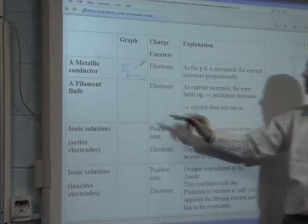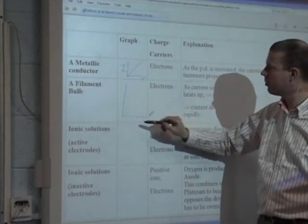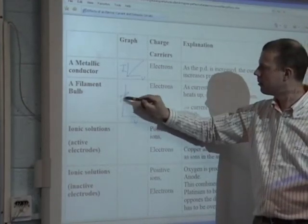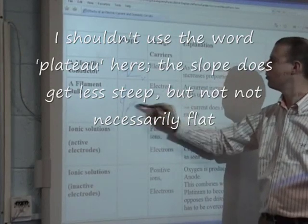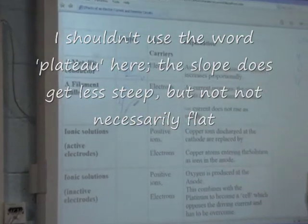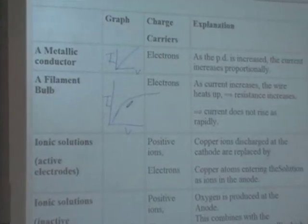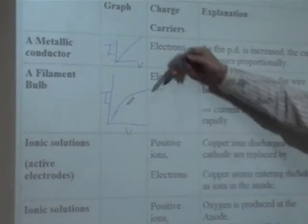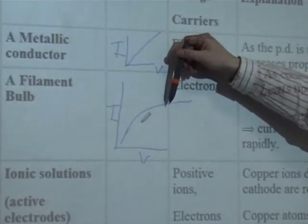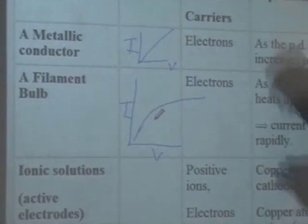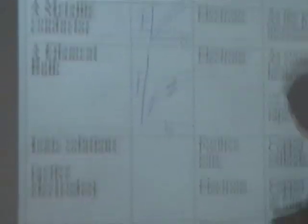So we'll see a filament bulb. What's the graph look like for a filament bulb? It goes up a small bit, and then it's got a curve. It goes up, and then it tends to plateau over like that. Why does it plateau? Because the resistance goes up, so it's harder for the current to go through. Why does the resistance go up? Because it heats up.